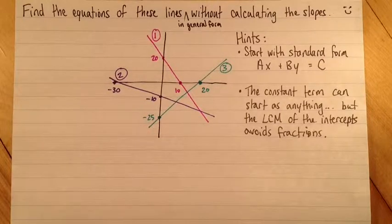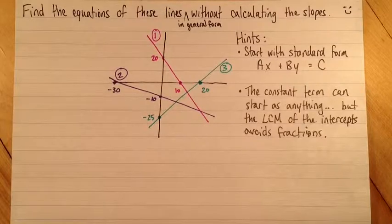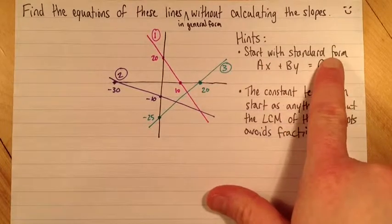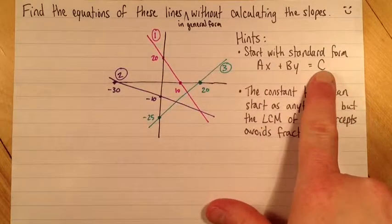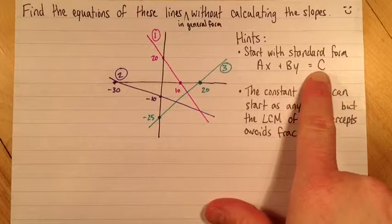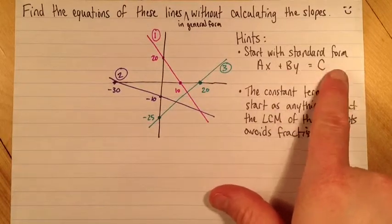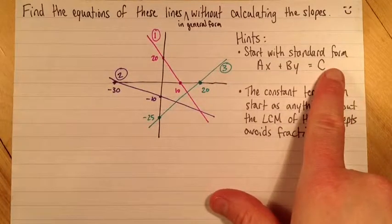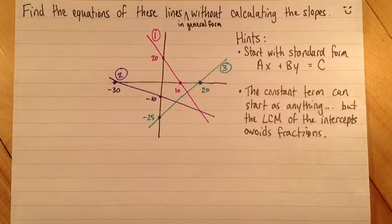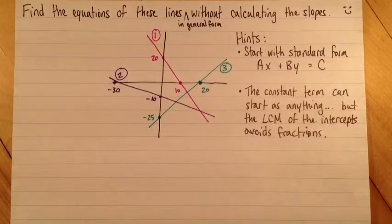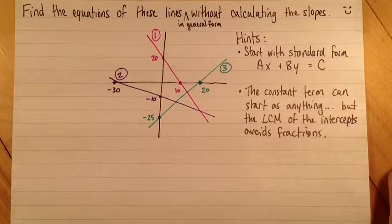Here are some hints. We're going to start with standard form, just to help us do the mental arithmetic. It's ax plus by equals c, where general form is ax plus by plus c equals zero. So it just means we won't have to do a subtraction for the sake of simplifying mental arithmetic. Then we'll just quickly subtract c from both sides and we'll have general form.